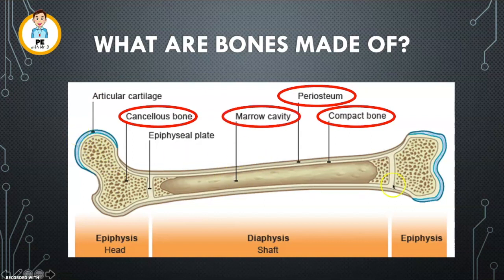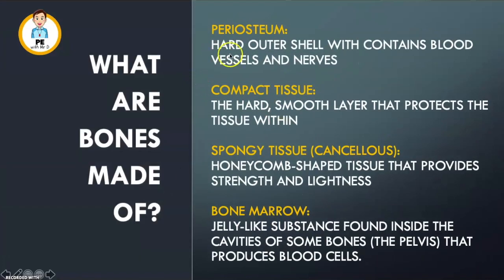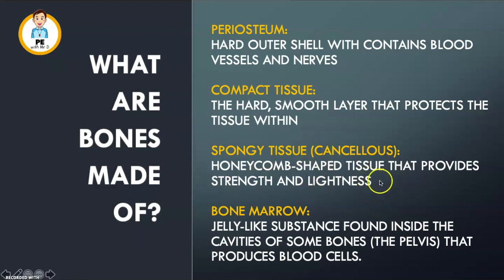And finally we have the marrow cavity — this is where the bone marrow lives. Bone marrow is a jelly-like substance which contains many nutrients. To summarise: the periosteum is a hard outer shell which contains the blood vessels and nerves. The compact tissue is directly under that, providing a hard smooth layer. We have the spongy or cancellous tissue, which is honeycomb shaped and super duper strong. Finally we have the bone marrow — and as a bonus fact, in some bones the bone marrow actually produces blood cells.